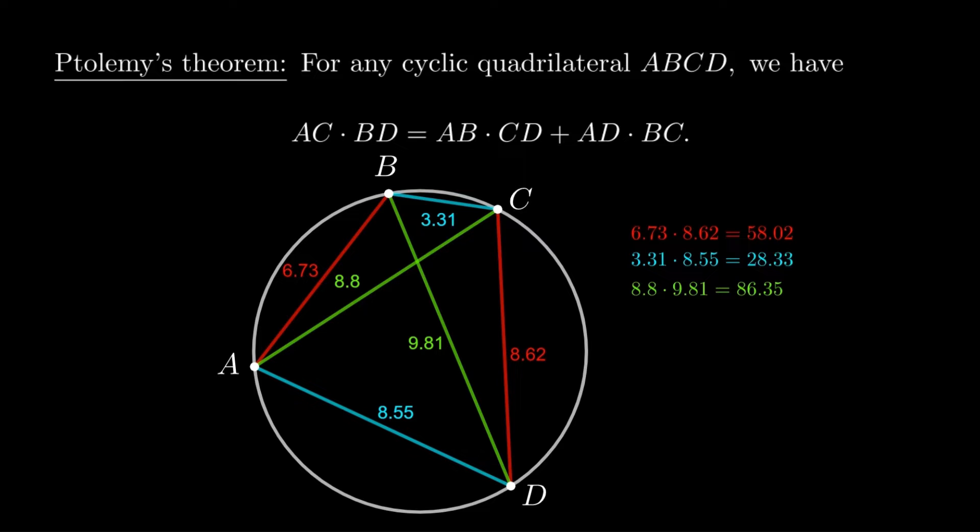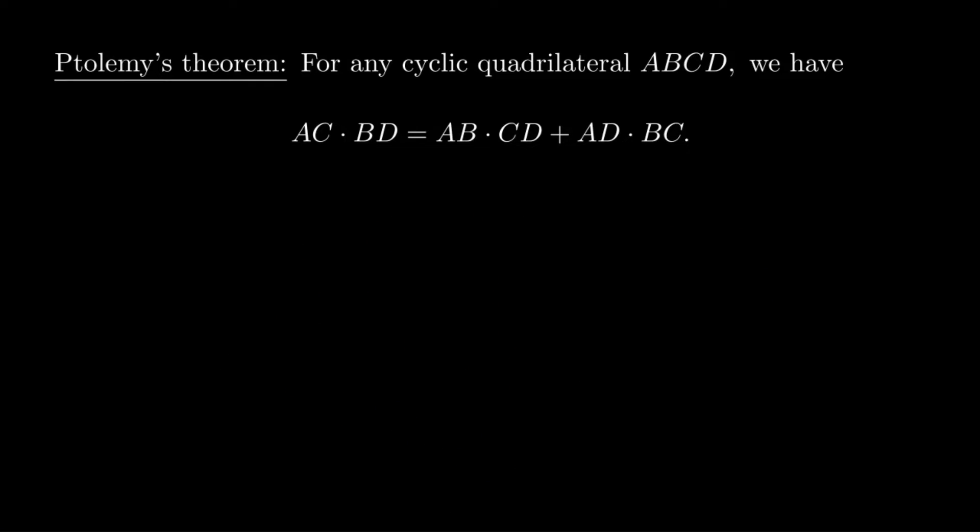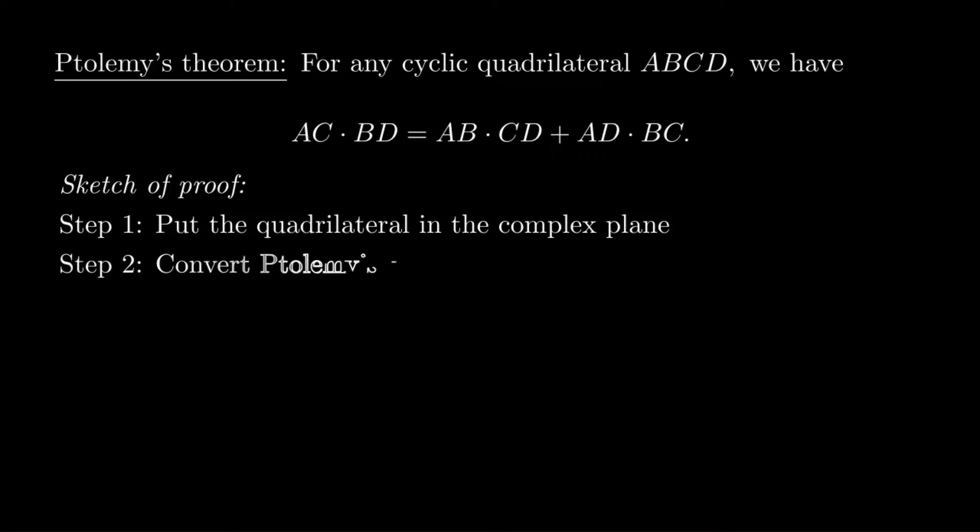Now there are many proofs of this, some of which use just geometry, some of which use complex numbers, but this one is one that I at least haven't found anywhere else before. Step one is we're going to put the quadrilateral in the complex plane, step two is to convert the statement of the theorem into an algebraic identity involving complex numbers, and then all we have to do is prove that identity.